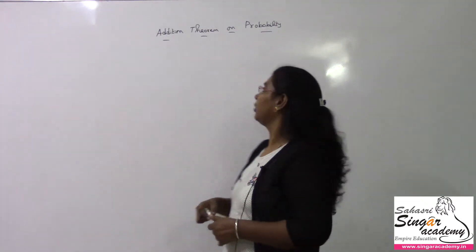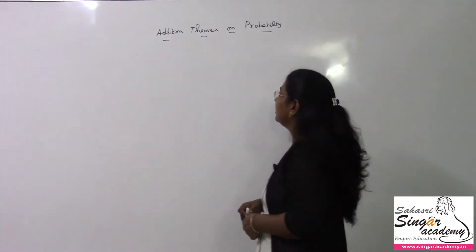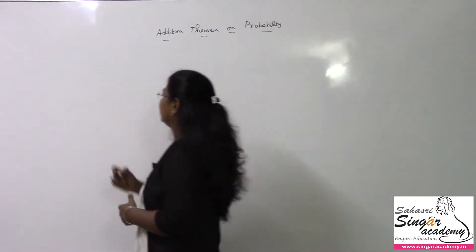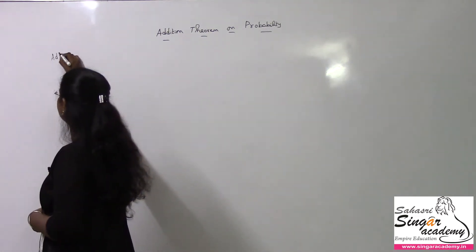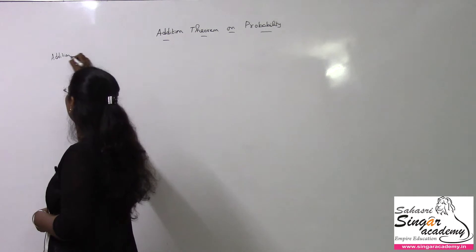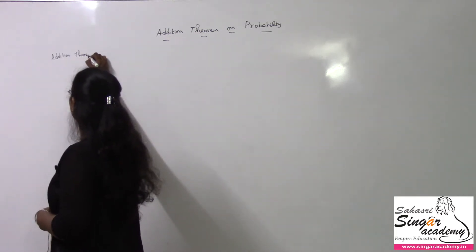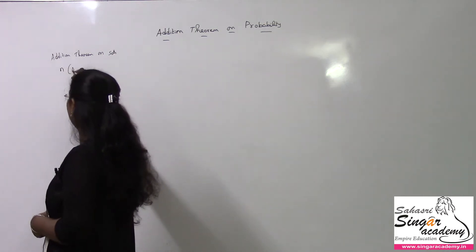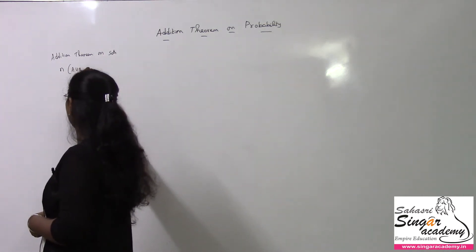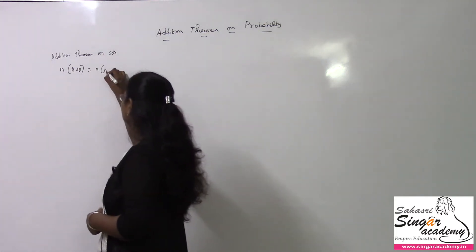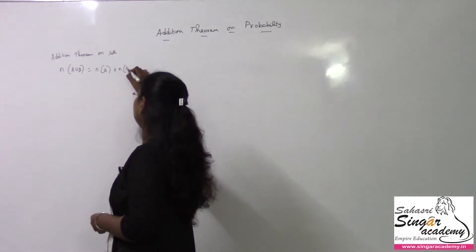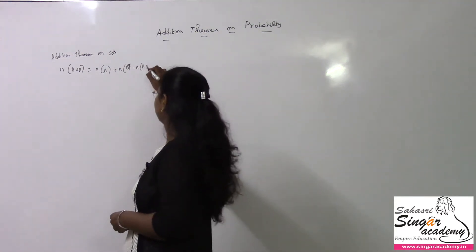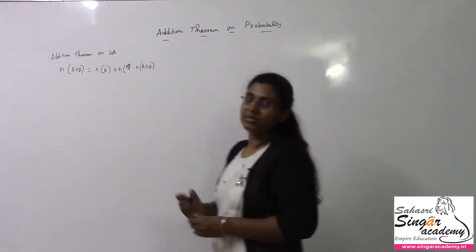Let us discuss the addition theorem on probability. One small recall is the addition theorem on sets. We have the formula: n(A ∪ B) = n(A) + n(B) − n(A ∩ B). It is very simple.